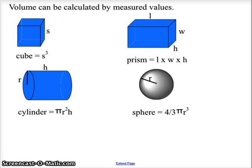We often get objects that are easy to measure — you can take out a ruler, measure each of the sides, and calculate volumes. That's side squared for a cube, length times width times height for a prism, pi r squared h for a cylinder, and four-thirds pi r cubed for a sphere.